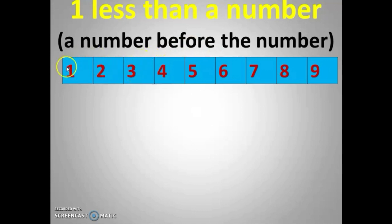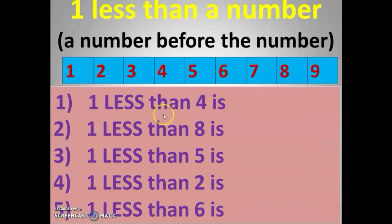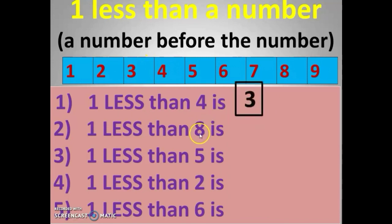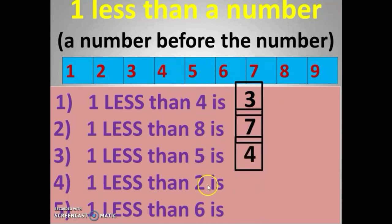So, one less than and before are the same. One less than four? — see the strip — it is three. One less than eight? Seven. One less than five? Four. One less than two? One. One less than six? Five.